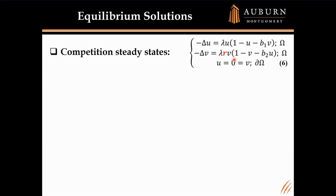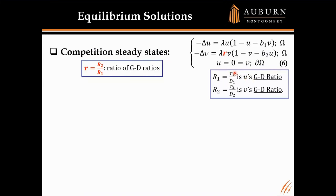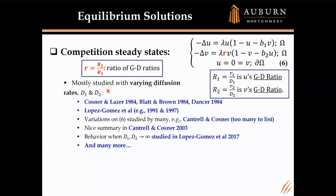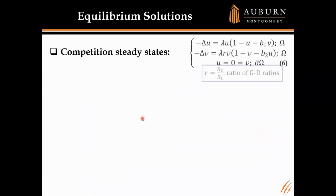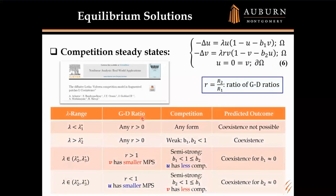For the competition model at steady state, we end up with an extra parameter R — the ratio of the growth-to-diffusion ratios. R1 measures the ratio of growth rate of u versus its diffusion rate, similarly R2 for v. Most literature has studied such models by varying diffusion rates, but our interest today is to fix patch shape and vary the area. In a recent paper in Nonlinear Analysis, we showed lots of different results, summarized in one table: if the island area is too small, coexistence is never possible; if large enough with weak competition, coexistence always happens; in intermediate semi-strong cases, trade-offs between minimum patch size and competition strength determine coexistence.